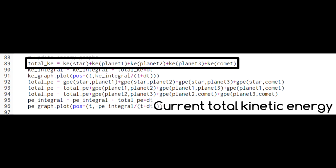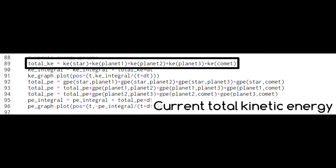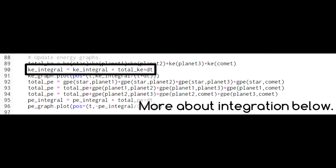Here we add together the total kinetic energy at the current time. Then we add this total times the time step to our current value for the integral. For a review of numerical integration, see the video linked in the description below. Then we divide by the total time to turn the integral into an average and graph the result.